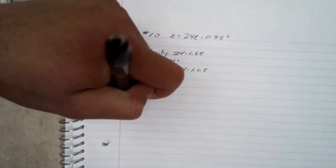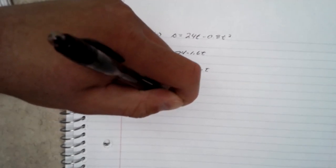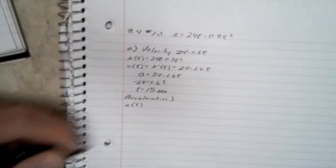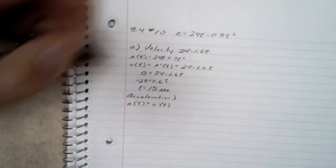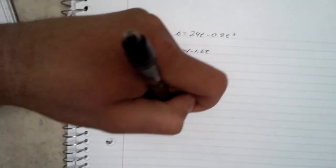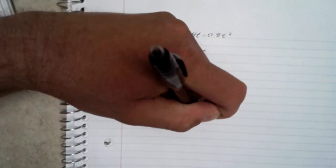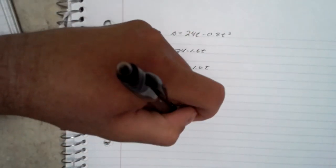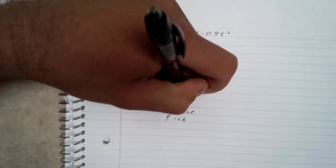And from there, for the acceleration. Acceleration is the derivative of the velocity equation, so that would equal 24 minus 1.6t. So 24 goes to 0 and your acceleration is going to be negative 1.6 meters per second squared.